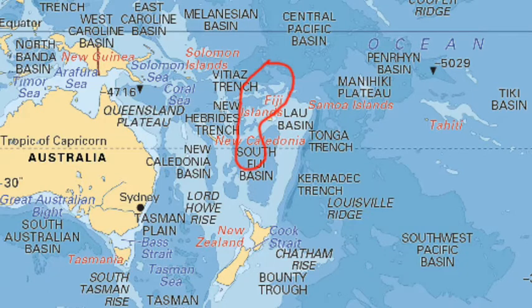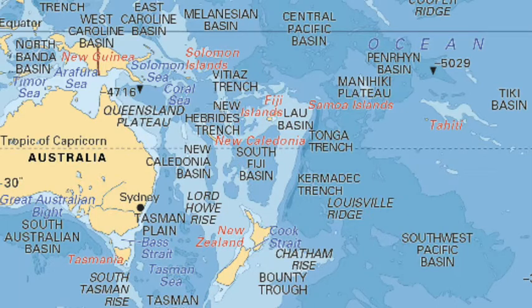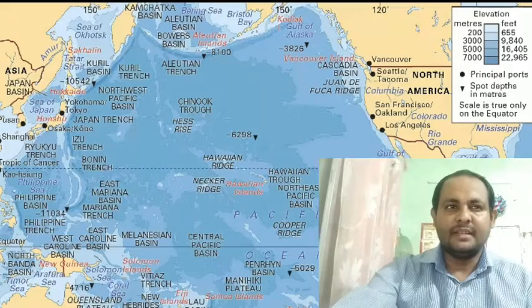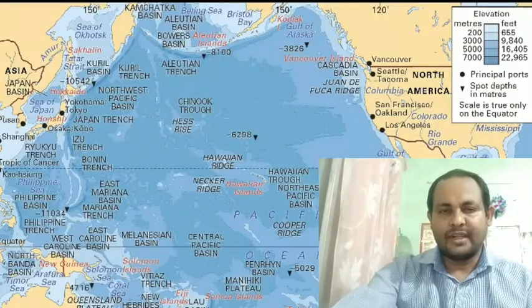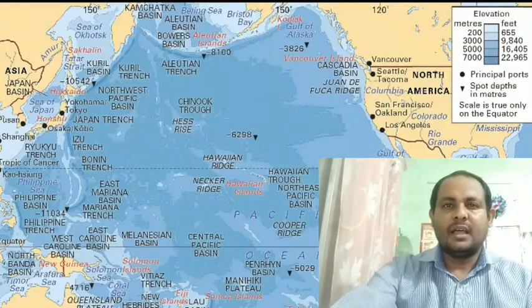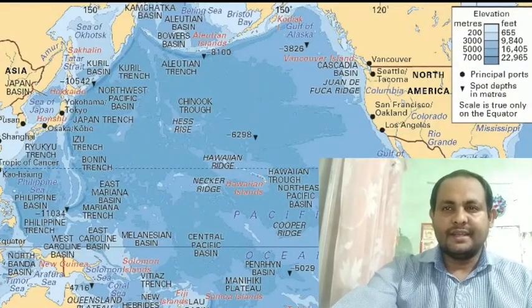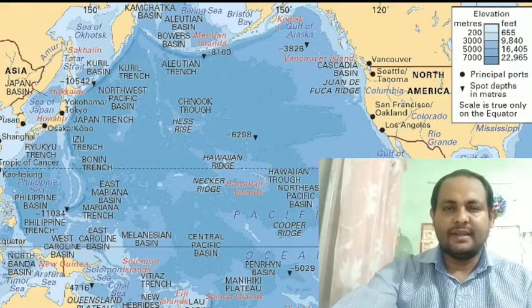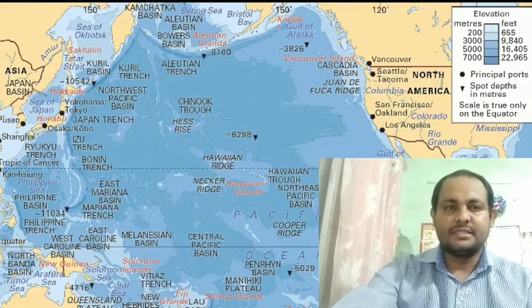The average depth of the Fiji Basin is 4,000 meters. The basin to the north of 20 degrees south is known as the North Fiji Basin, while the South Fiji Basin, between 20 degrees south and 32 degrees south, is bounded by the Norfolk Island ridge in the west and the Kermadec-Tonga Trench in the east.